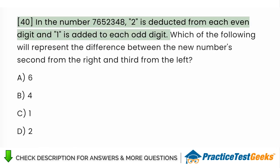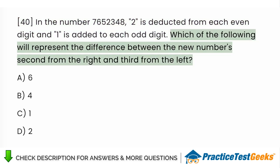In the number 765-2348, two is deducted from each even digit and one is added to each odd digit. Which of the following will represent the difference between the new number's second from the right and third from the left? A. Six